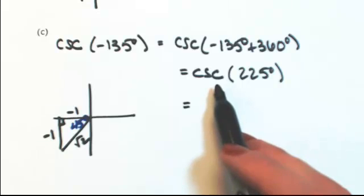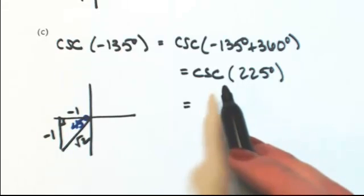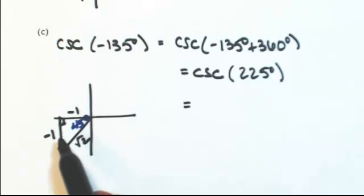Cosecant is the reciprocal of sine. Sine is opposite over hypotenuse, so then cosecant is hypotenuse over opposite.